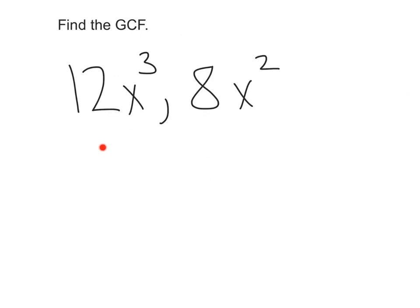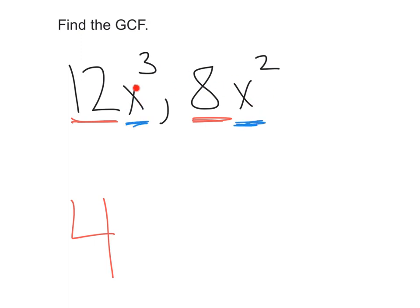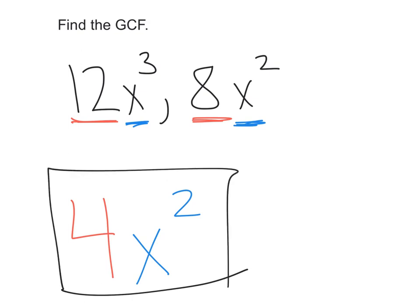Let's try a couple with numbers and variables together. First, I'll take 12 and 8. I can look in my brain for this one — the greatest common factor of 12 and 8 is 4, because 4 times 3 is 12 and 4 times 2 is 8. Now for x cubed and x squared, the most x's they have in common is 2, from x squared. So my greatest common factor overall is 4x squared.